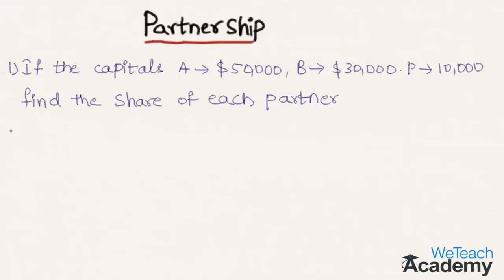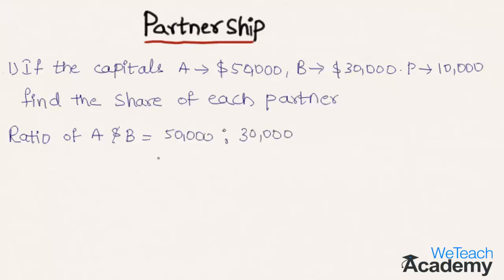First, let us find the ratio of both partners. A's capital is $50,000 and B's capital is $30,000, so we get the ratio as 5 to 3.